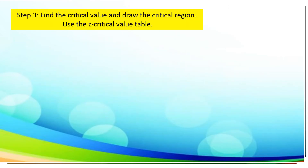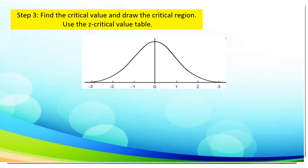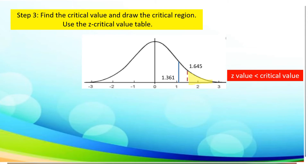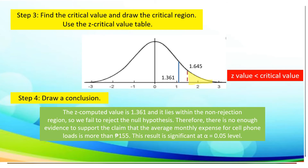Now let us follow step 3: find the critical value and draw the critical region. Using the z-critical value table, we draw the standard normal curve and locate the critical value, which is 1.645, under alpha equal to 0.05. Locating our computed value, which is 1.361, it shows that the z-value is less than the critical value. Therefore, to draw the conclusion: the z-computed value of 1.361 lies within the non-rejection region, which means we failed to reject the null hypothesis. Therefore, there is not enough evidence to support the claim that the average monthly expense for cell phone load is more than 155 pesos. This result is significant at the 0.05 level.